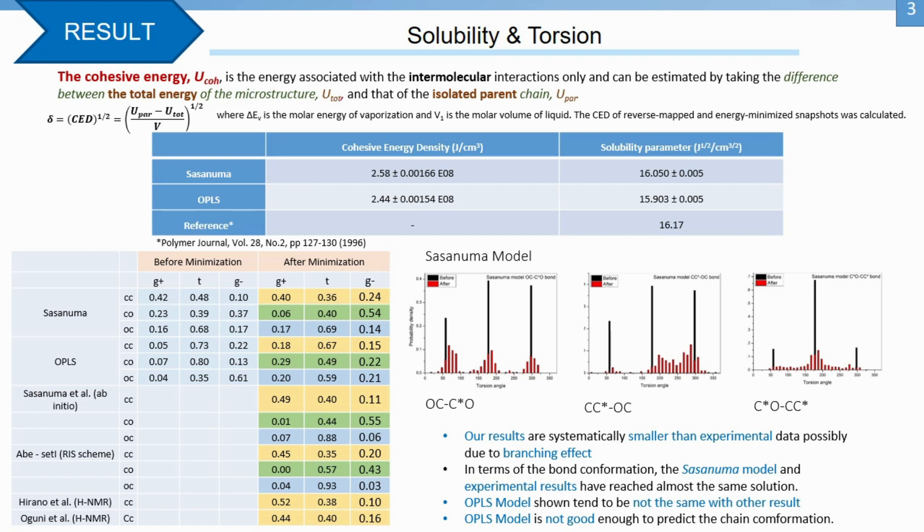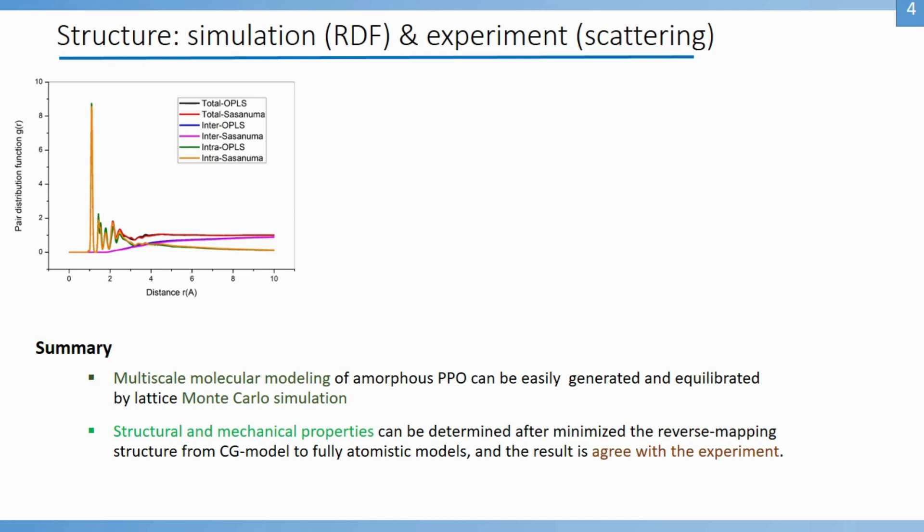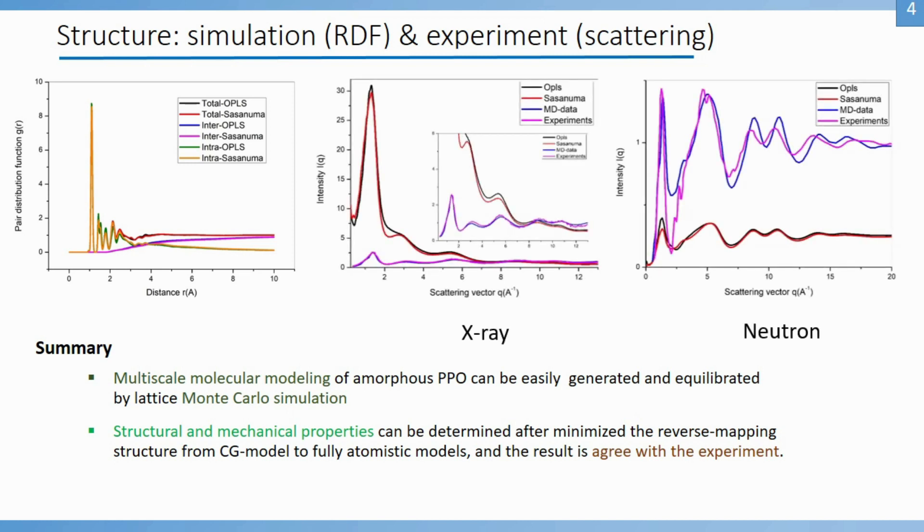So, molecular properties are sensitive to method used to generate the fully atomistic model. To validate the PPO model further, we determine the x-ray scattering curve, which can be obtained from Fourier transform of radial distribution function. For x-ray scattering, we present the comparison between our results with MD simulation and experimental data from literature. The scattering profiles are different in intensity, but the peak position at each scattering vector are quite in good agreement.